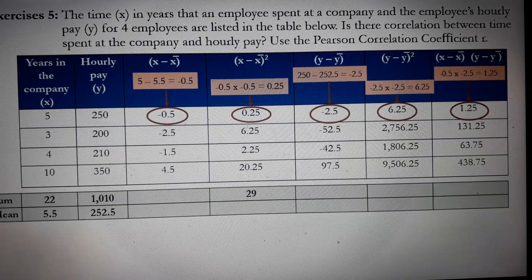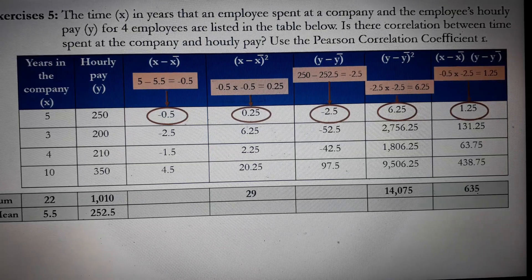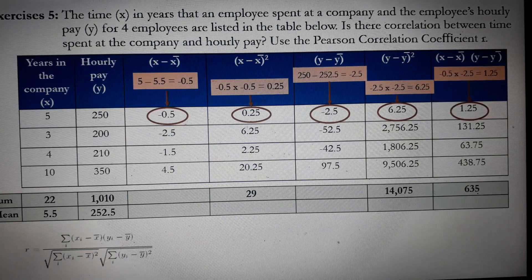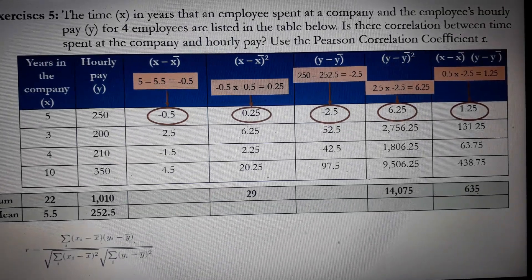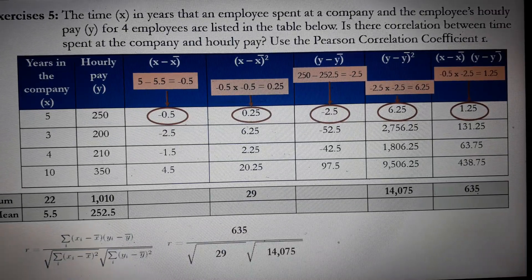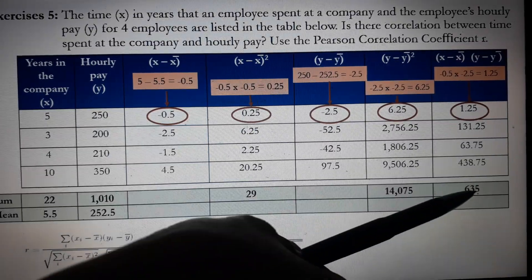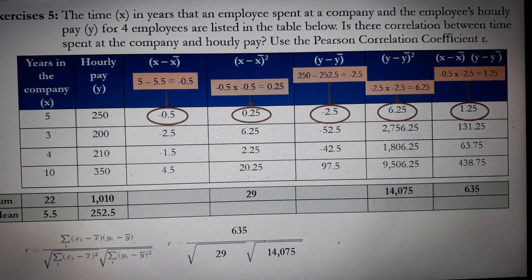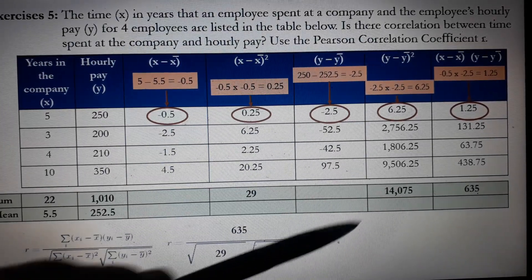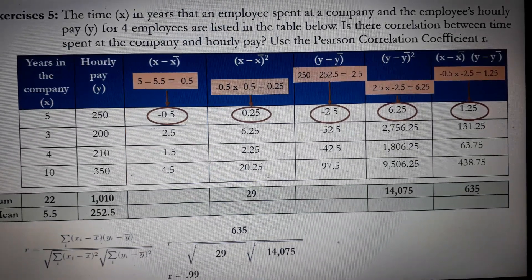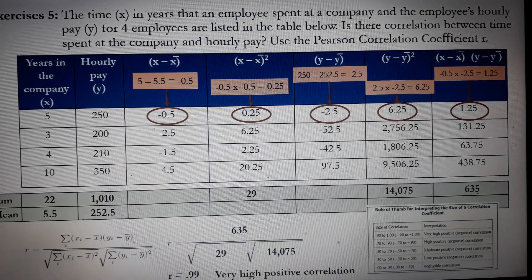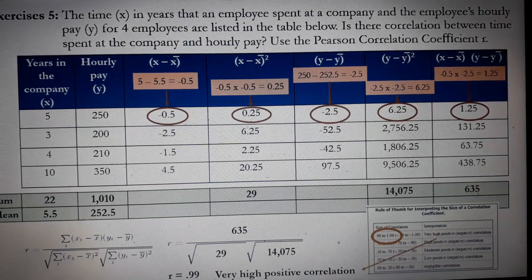Next, we get the sum of (X minus mean of X) squared, the sum of (Y minus mean of Y) squared, and the sum of the product of (X minus mean of X) and (Y minus mean of Y). We then substitute into our equation to solve for R. The numerator is 635, the sum from the last column. The denominator uses 29 and 14,000.75. By calculation, the result is R = 0.99, interpreted as very high positive correlation.